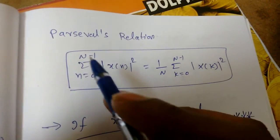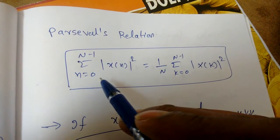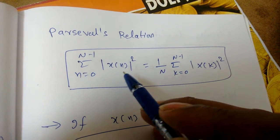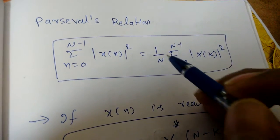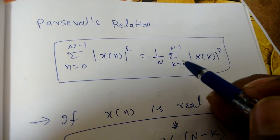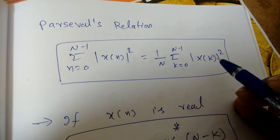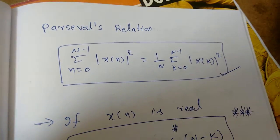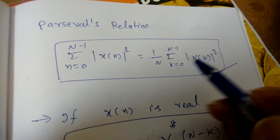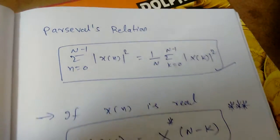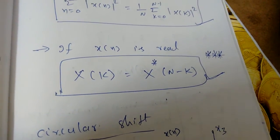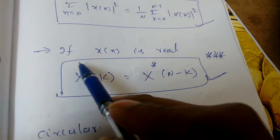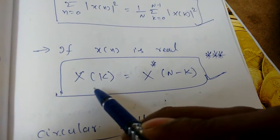The last general relation is Parseval's theorem: the sum from n=0 to N-1 of |x(n)|² equals (1/N) times the sum from k=0 to N-1 of |X(K)|². This relates the energy in the time domain to the energy in the DFT domain.